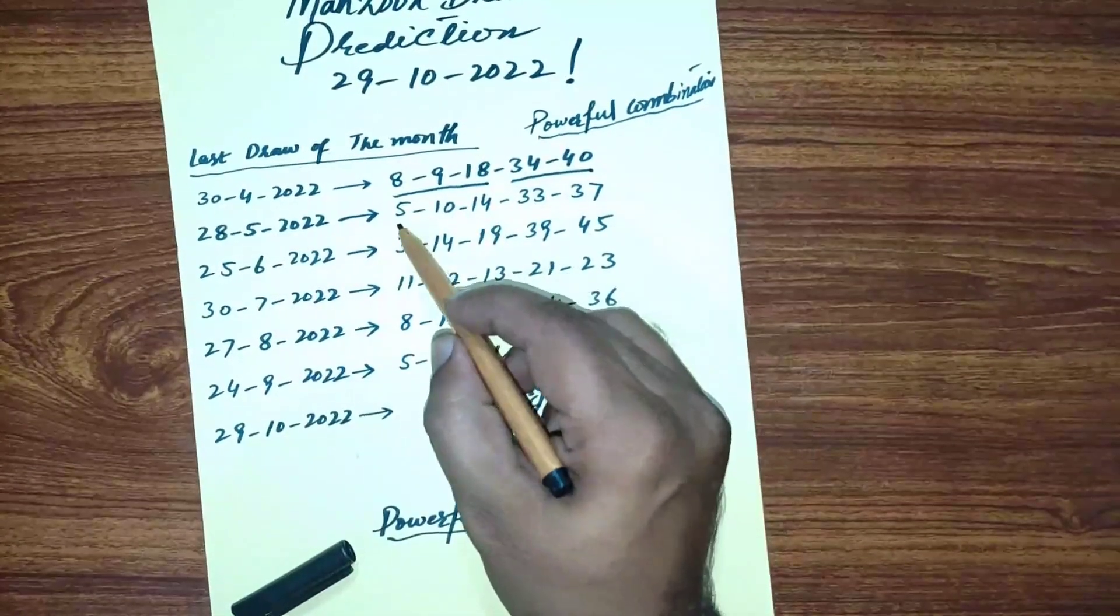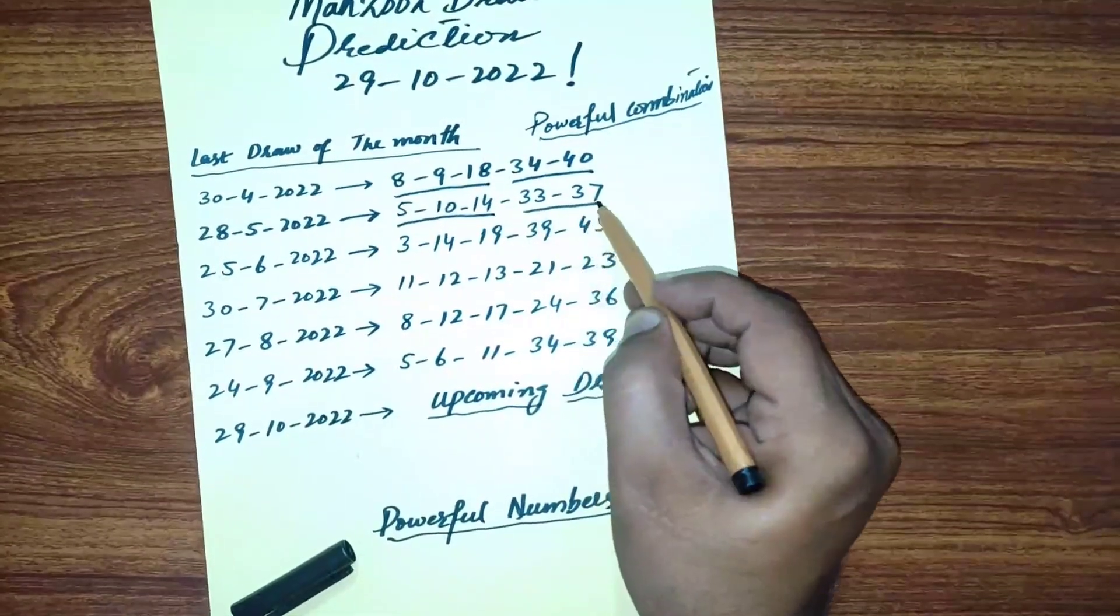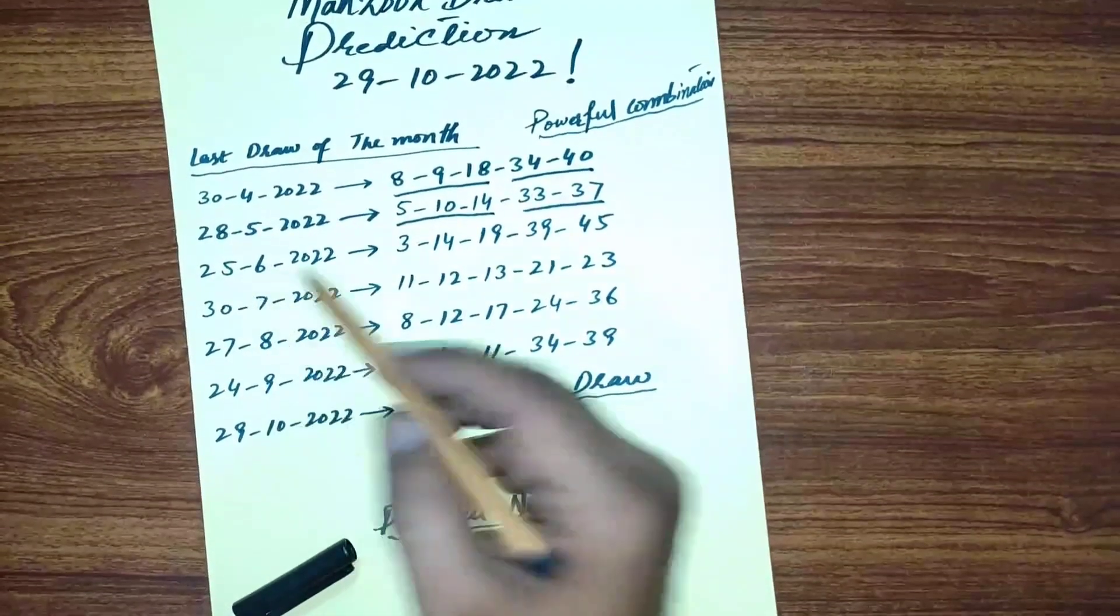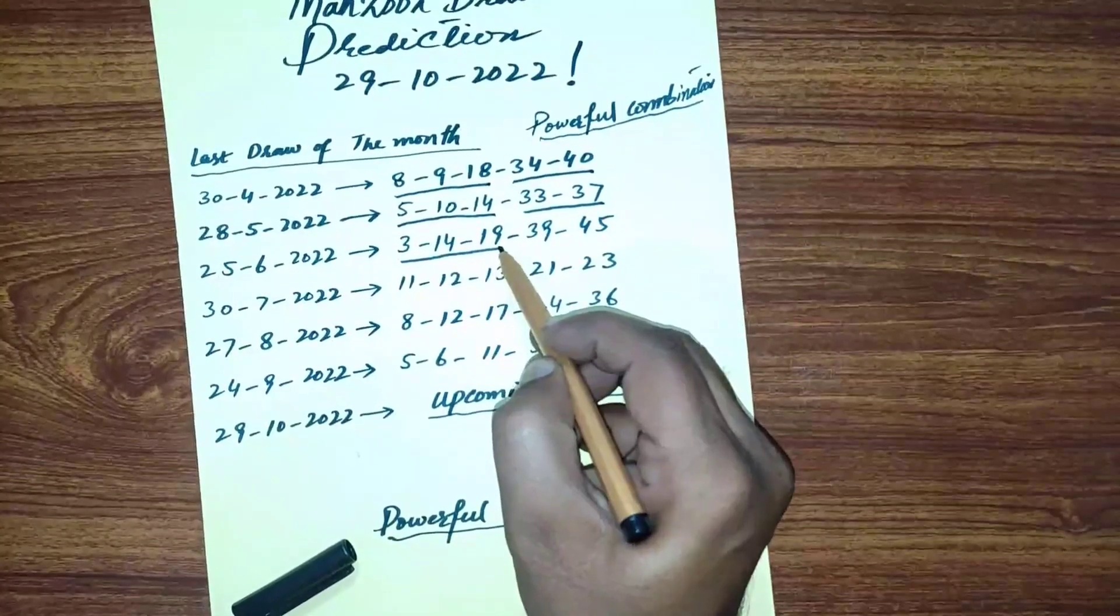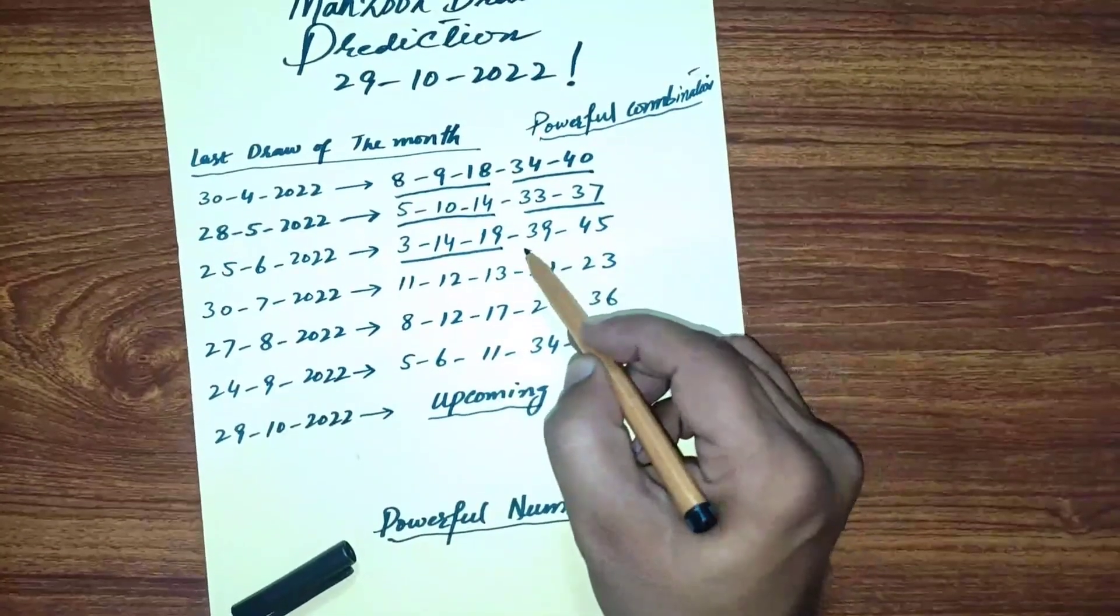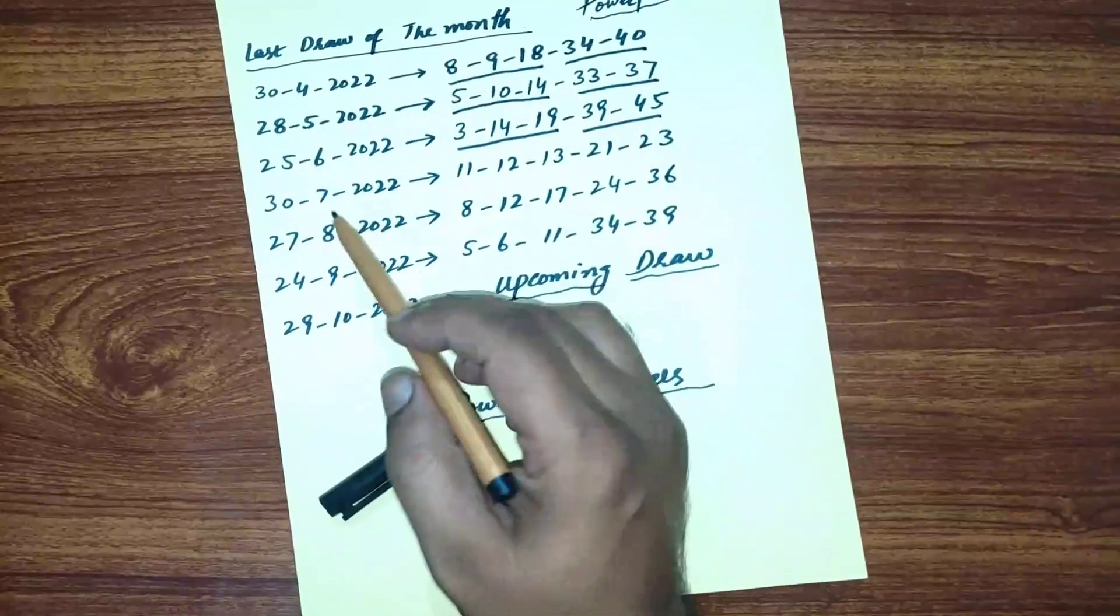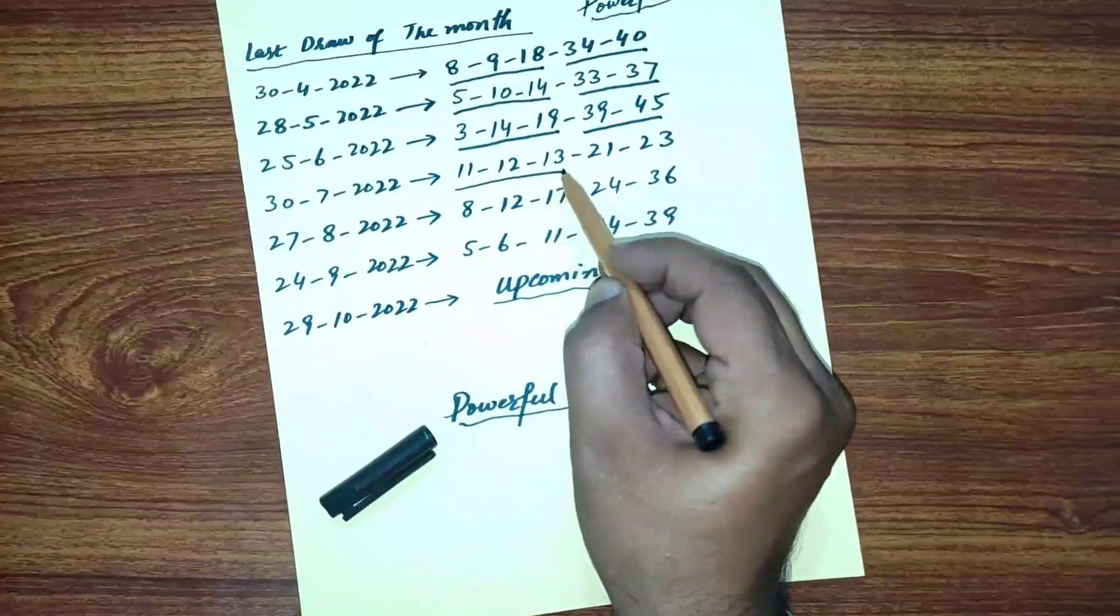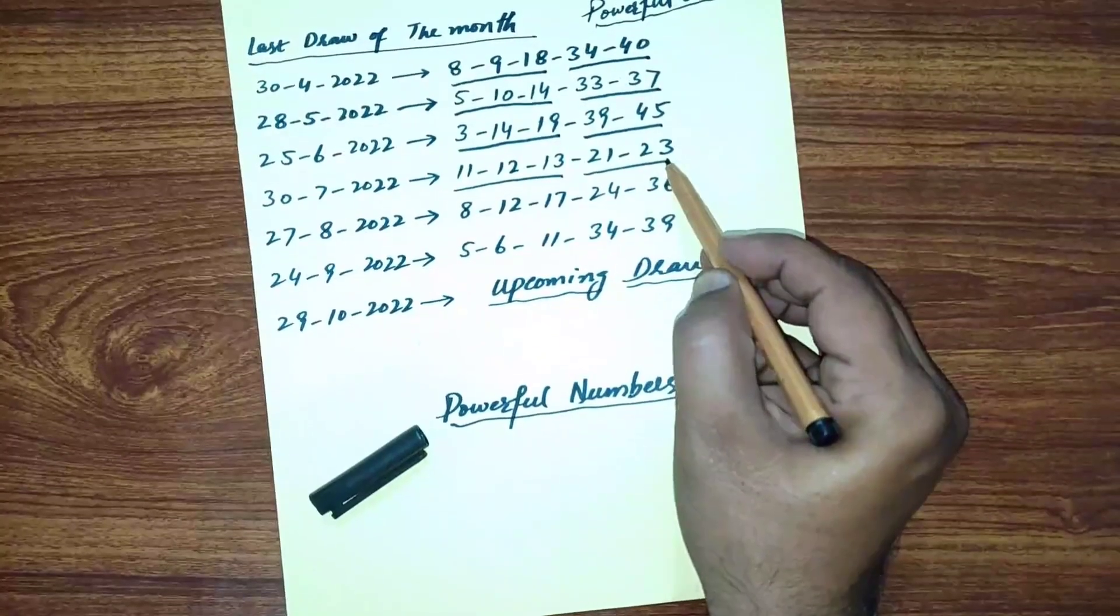In the next month's last draw, you can see again they picked three numbers from 1 to 19 and two numbers from 20 to 49. The following month, again three numbers from 1 to 19 and two numbers from 20 to 49.